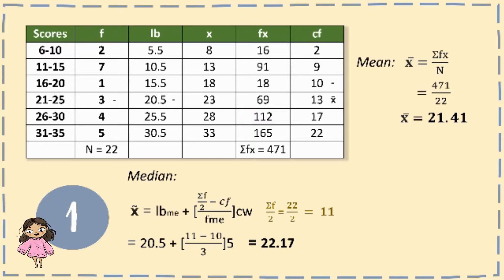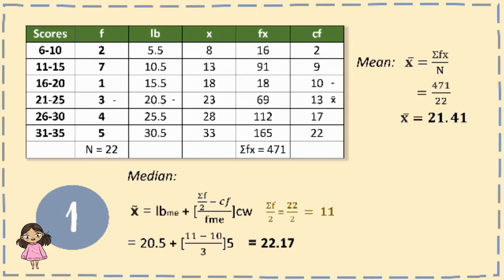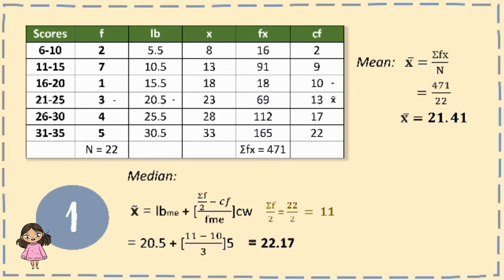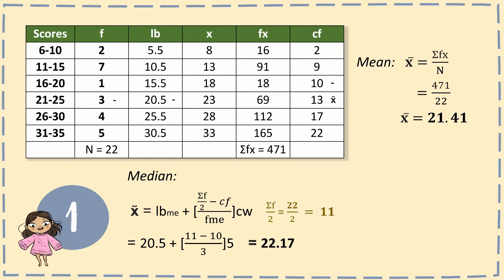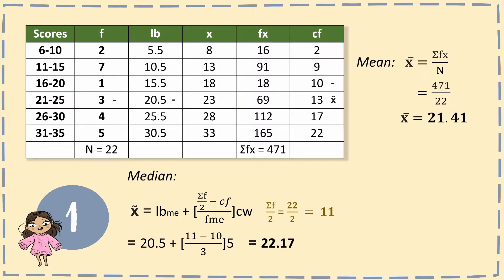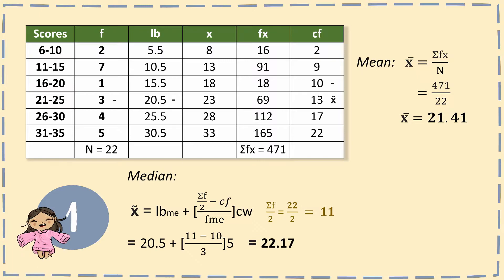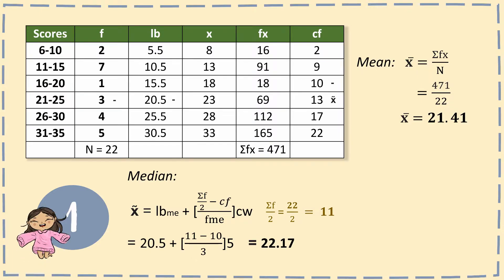For the first scores, 6 to 10 — counting 6, 7, 8, 9, 10 — we have 5. So: 20.5 plus (11 minus 10) divided by 3, times 5, equals 22.17. Note that you can directly input this on your scientific calculator.